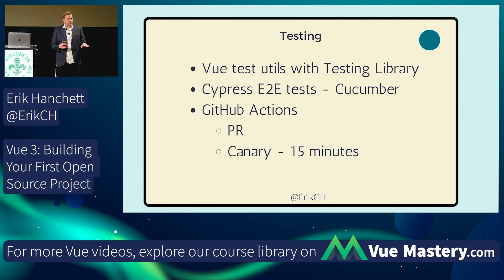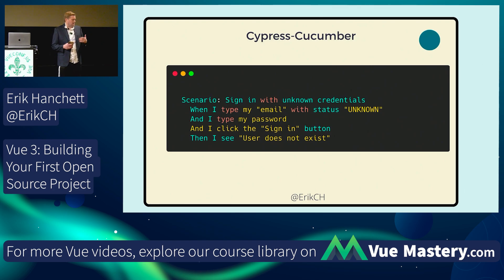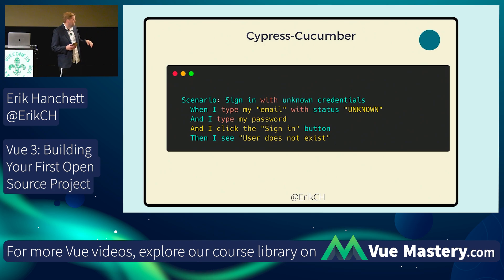We did something kind of novel for an open-source project: we set up a canary. So every 15 minutes the code runs and we make sure it doesn't break anything as we continuously merge new code in. Here's the idea of Cypress Cucumber — it's a way to write your tests in human-readable, behavior-driven form so people not necessarily technically inclined could understand it. These all translate over to Cypress functions. For example: 'sign in with unknown credentials, when I type my email with status unknown, I type my password, click the sign-in button.' And this is how many of our tests in the library are written.